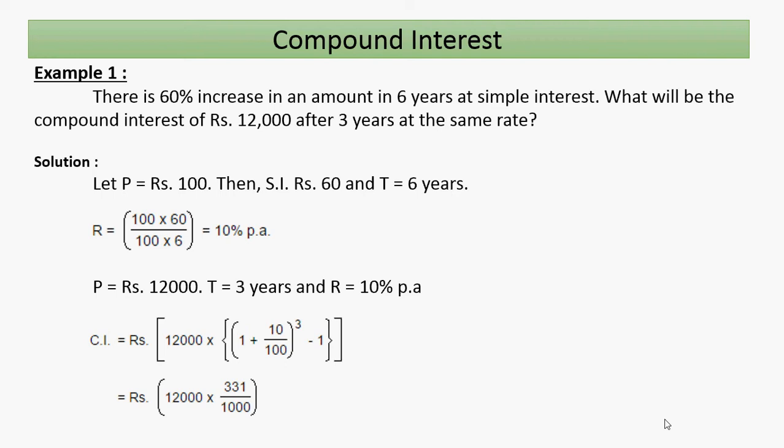Replacing the values in the formula: 12,000 × [(1 + 10/100)^3 − 1] = 12,000 × [331/1000 − 1]. So the compound interest for three consecutive years is rupees 3,972.